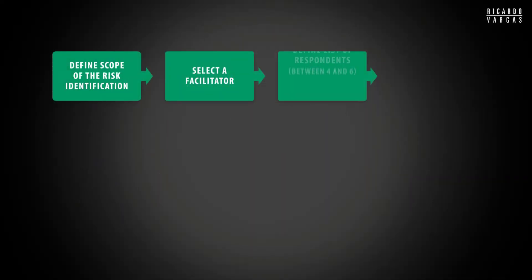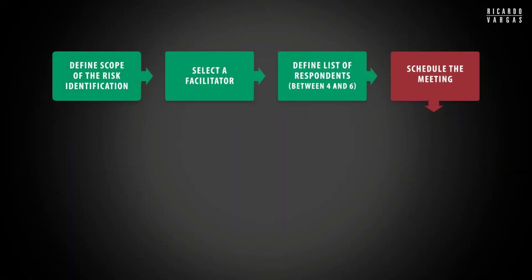I suggest there is no official rule, but I suggest a group between four, five, six. This is a magic group. Don't grow too much and don't make a too small group. So four, five, six is a very nice group. And then you schedule the meeting.